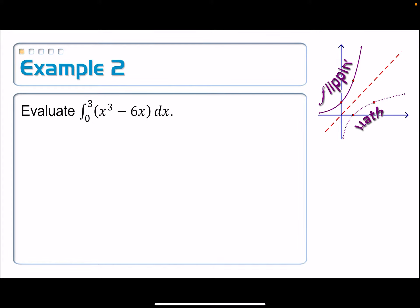For example two, we want to evaluate something that uses the new symbol we just learned about, definite integral. So we want to evaluate the definite integral from 0 to 3 of, here's our function, x cubed minus 6x dx. And I usually read this dx as with respect to x.